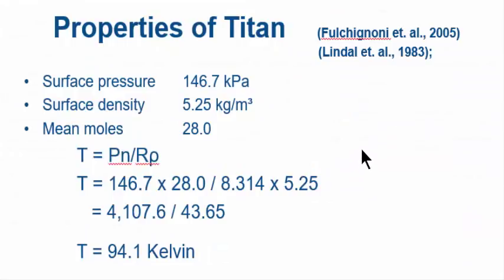Okay, let's keep going while we're hot. Properties of Titan. Biggest moon of the planet Saturn. The only moon with a thick atmosphere, thick as the Earth's atmosphere. Gas data from these authors here. Surface pressure: 146.7 kPa. Surface density: 5.25 kilograms per cubic meter.